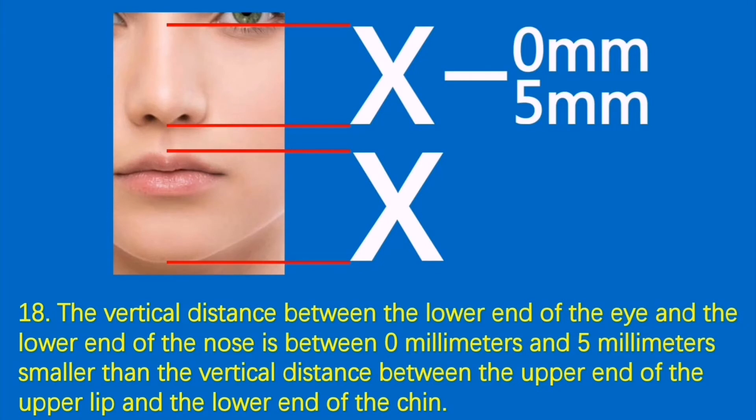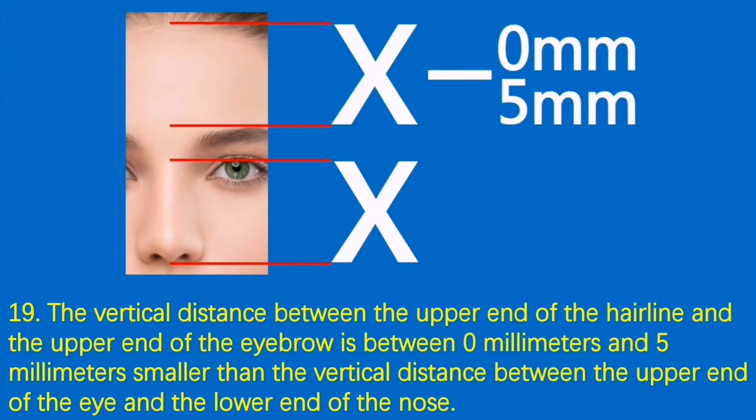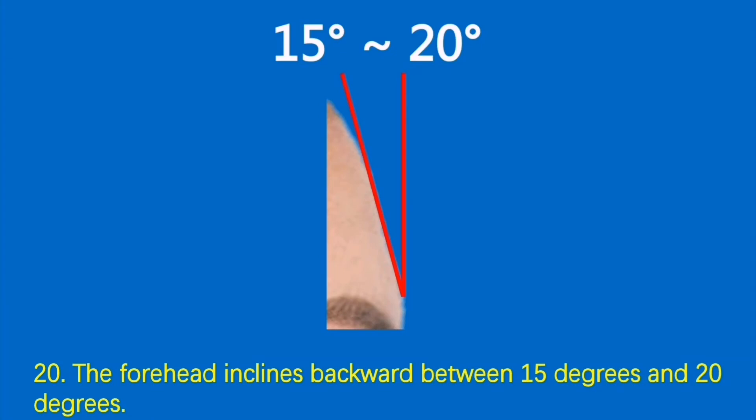18. The vertical distance between the lower end of the eye and the lower end of the nose is between 0 millimeters and 5 millimeters smaller than the vertical distance between the upper end of the upper lip and the lower end of the chin. 19. The vertical distance between the upper end of the hairline and the upper end of the eyebrow is between 0 mm and 5 mm smaller than the vertical distance between the upper end of the eye and the lower end of the nose. 20. The forehead inclines backward between 15 degrees and 20 degrees.